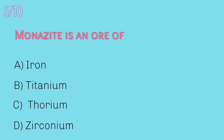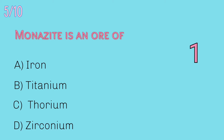Fifth question: monazite is an ore of — iron, titanium, thorium, or zirconium? Answer: Thorium. Monazite is an important ore for thorium, platinum and cerium. It is often found in place deposits. India, Madagascar and South Africa have large deposits of monazite sands. The deposits in India are particularly rich in monazites.